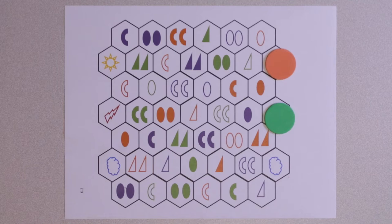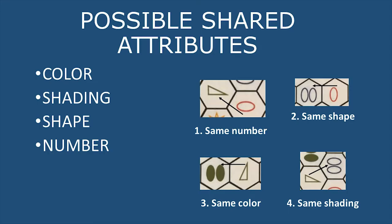To move forward, the spaces must share a side and must have at least one attribute in common. The attributes the spaces may share are color, shape, shading, and number of shapes.